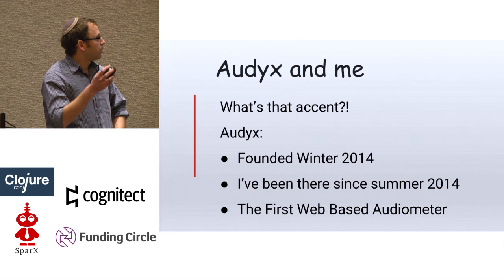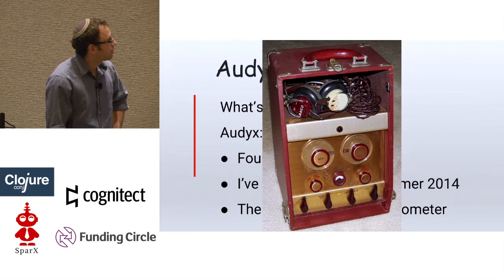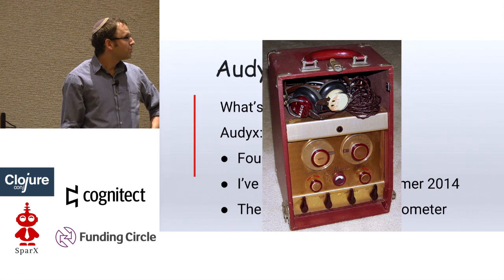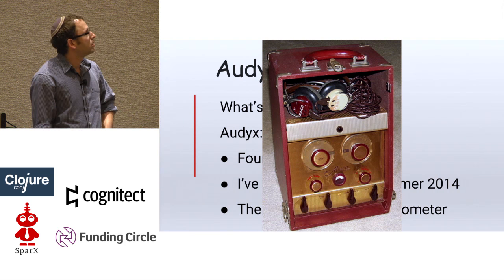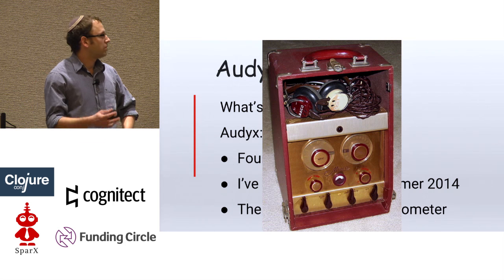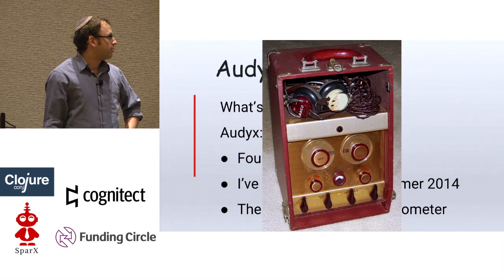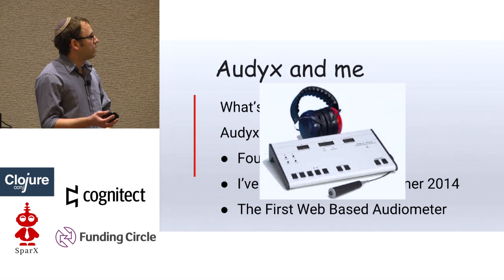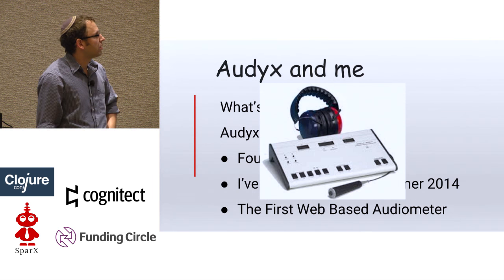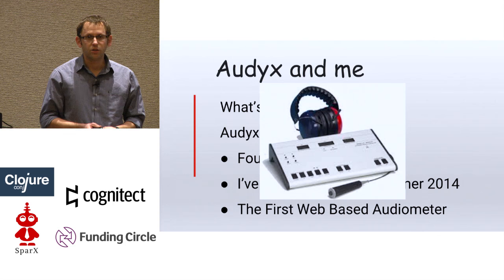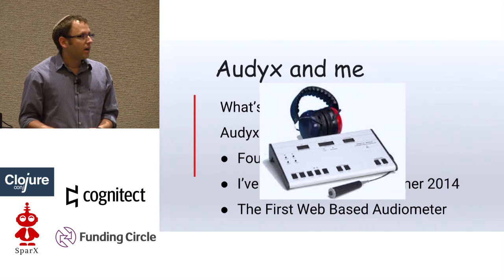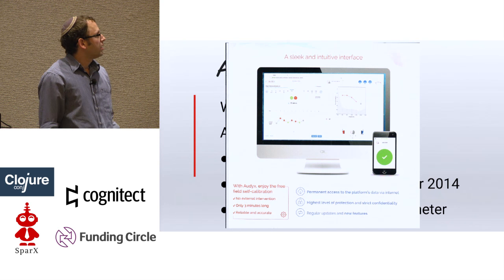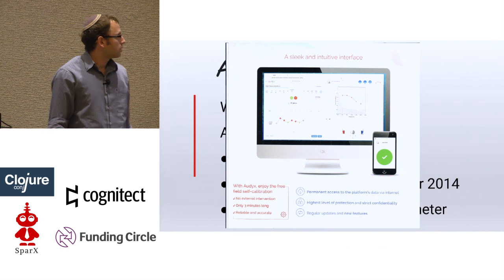What is an audiometer? Basically, it's a piece of hardware. You connect different kinds of transducers to it and produce sounds in order to measure the hearing of people. This is what they usually look like. We at Audix decided that it's about time that audiology moves into the 21st century. So, using a simple Chrome browser and a regular PC, this is what our audiometer looks like.